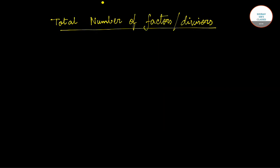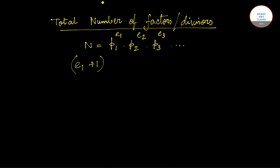Now, coming to the next set of formulas — how to find the total number of factors or total number of divisors of any number. If n equals p1 to the power e1 into p2 to the power e2 into p3 to the power e3 and so on, then the total number of factors of n will be (e1 + 1) into (e2 + 1) into (e3 + 1) into dot dot, continuing for each prime factor.